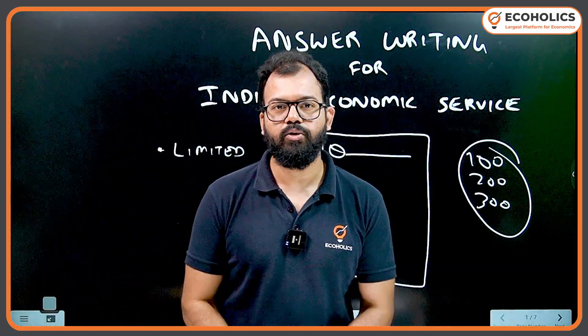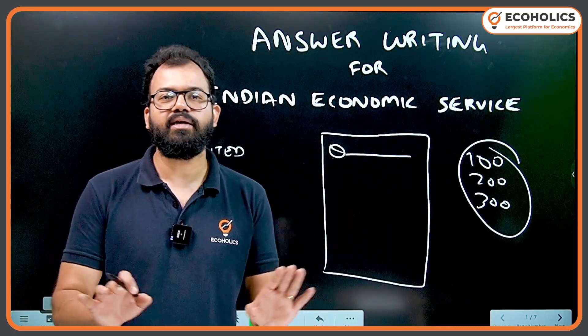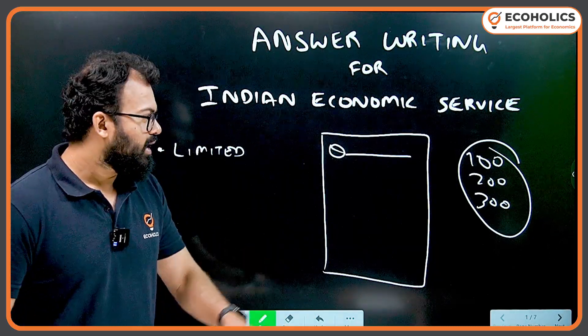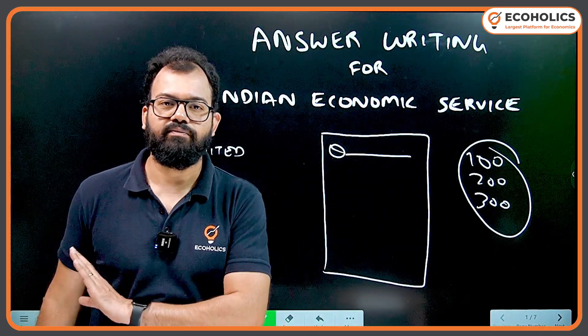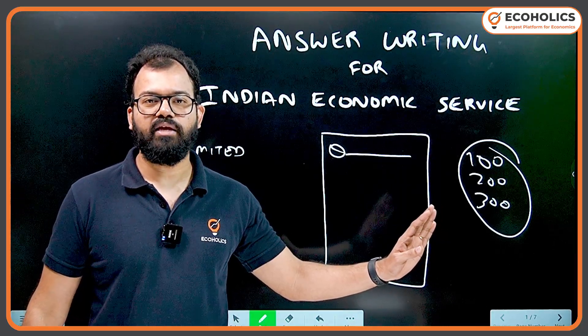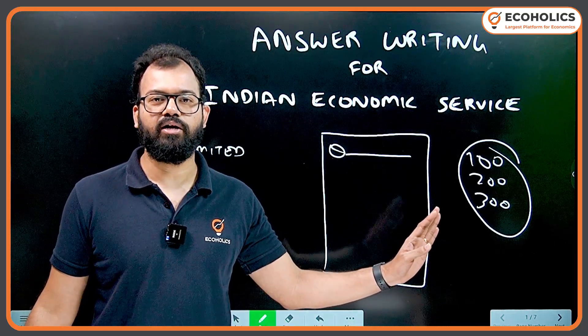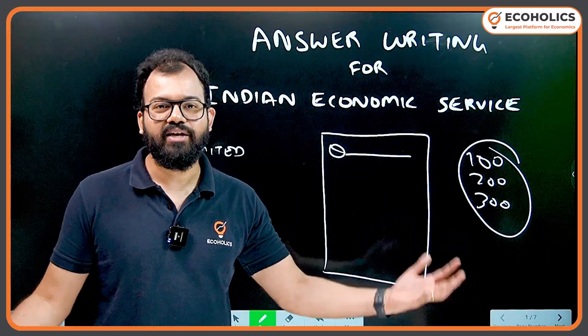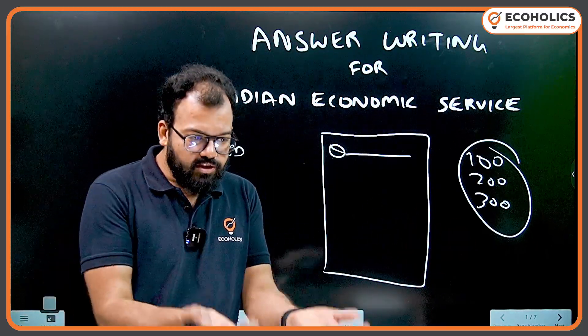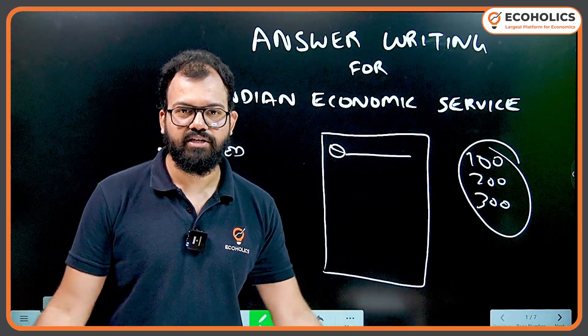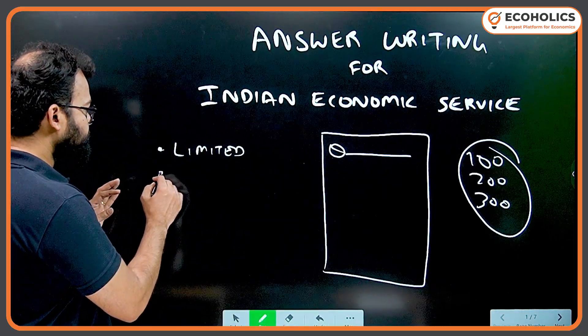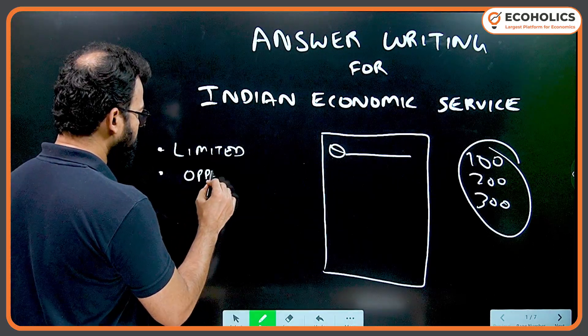For example, today you're reading indifference curve - read that only, make notes, and write one question on indifference curve. Topic is done and dusted. It's not rocket science. It's just information you present on paper and revise.